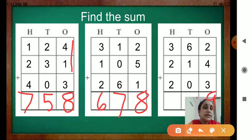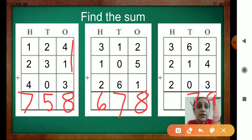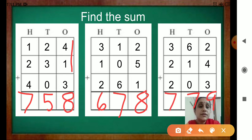Now the next — 10s place. 6 plus 1 is 7. And 7 plus 0, so you will get 7 only. Now the 100s place: 3 plus 2 — keep 3 in your mind, take out 2 fingers: 3, 4, 5. And then 5 plus 2 is 7. Now check — is it correct or not? You have done correctly.